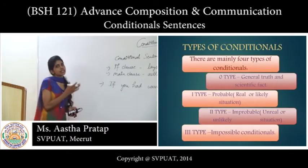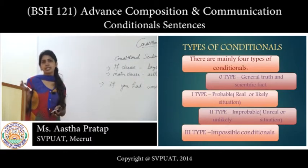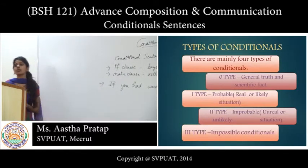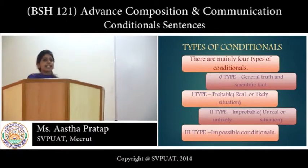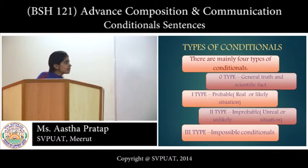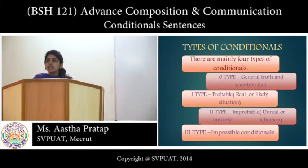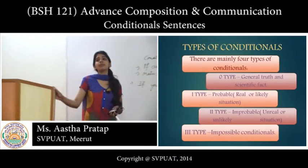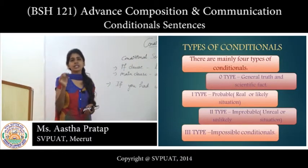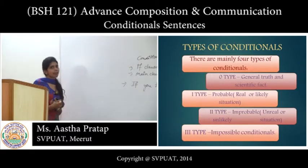We divide conditional sentences into four parts. First is the zero type, which includes sentences based on scientific facts or general truths. Second is the probable type, which deals with real life situations — things that can happen any time. Third is the second type, dealing with improbable or unreal situations that cannot take place or happen very rarely. Fourth is the third type, dealing with impossible situations where the time has already passed.